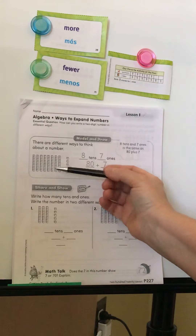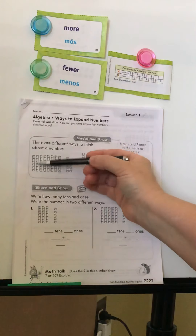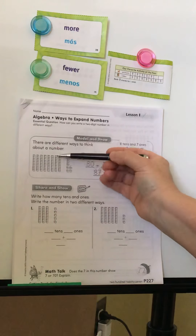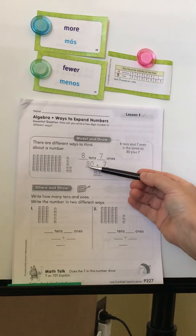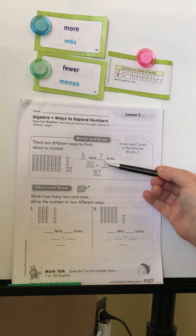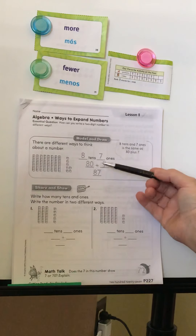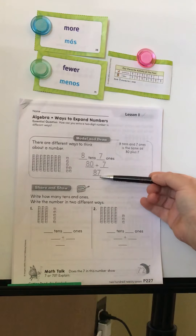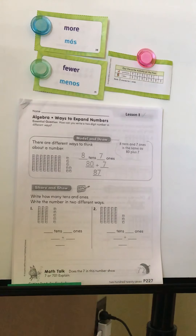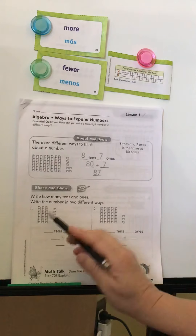Eight tens is not just eight — it's eighty, because we count by tens: ten, twenty, thirty, forty, fifty, sixty, seventy, eighty. So I write eighty. Then count the ones — it looks like a ten frame. I can see seven ones, which is just seven. Adding them together: eighty plus seven equals eighty-seven.